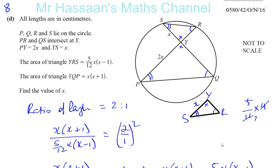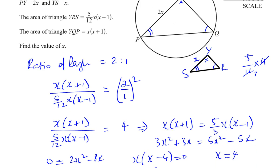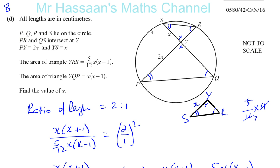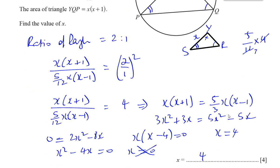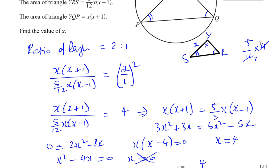If you're in an exam and you don't have a mark scheme, you can check if it works. If x equals 4, then this is going to be 4 and this is going to be 8, which is twice. If x equals 4, you're going to have 5/12 times 4 times 3, which gives you 5, and here you'll have 4 times 5, which equals 20. The ratio of the areas is 4, which is sensible, so we have the right answer. I can check with the mark scheme and make sure. Thank you very much for watching.